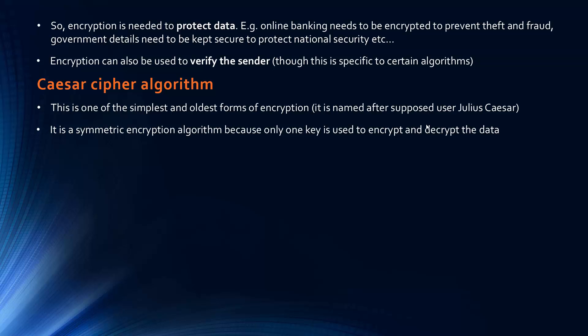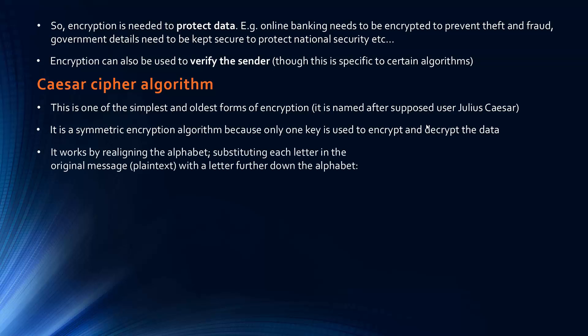Being a symmetric encryption algorithm — something you probably don't need to know — means only one key is used to encrypt and decrypt the data. Public key encryption, which I mentioned as being interesting, uses two different keys: a public key and a private key. But the Caesar cipher uses just one key.